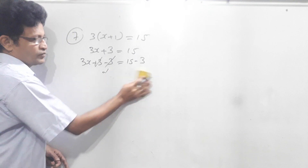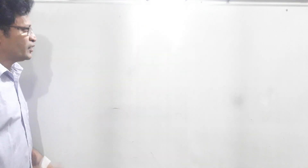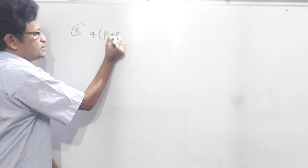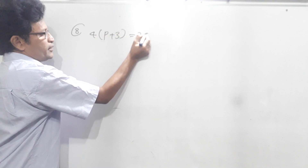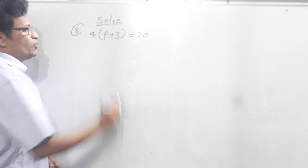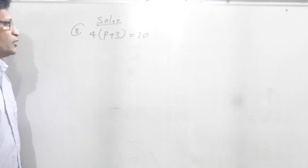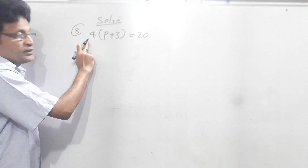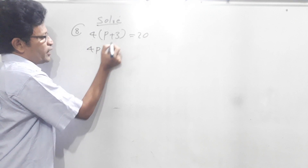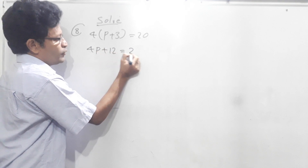The 7th question. Now we will do the 8th question. 8th question means 4 times (p plus 3) is equal to 8. Find the value of p. Here we have to remove the bracket. 4 times p is 4p, 4 times 3 is 12, equal to 8.